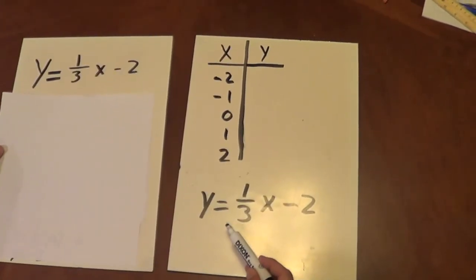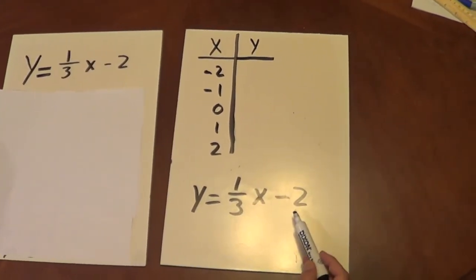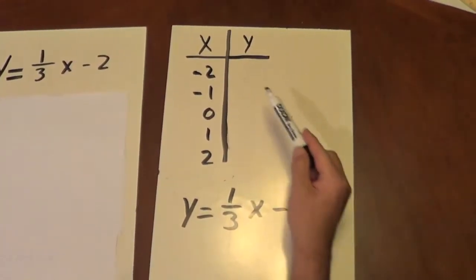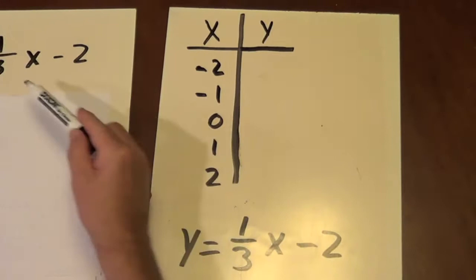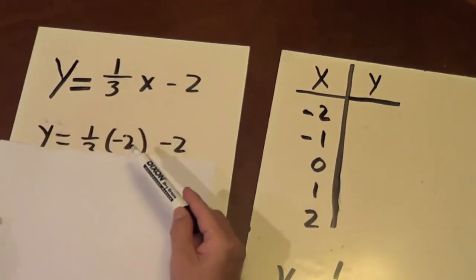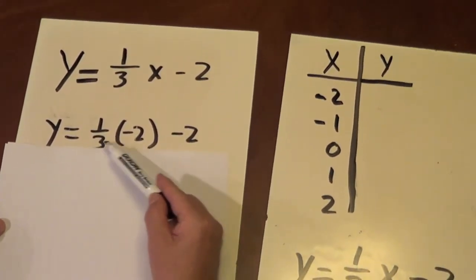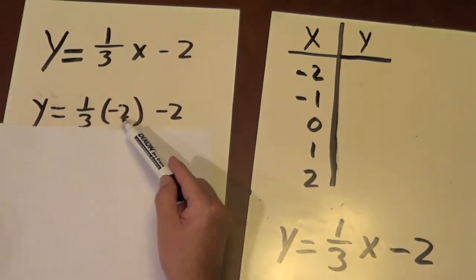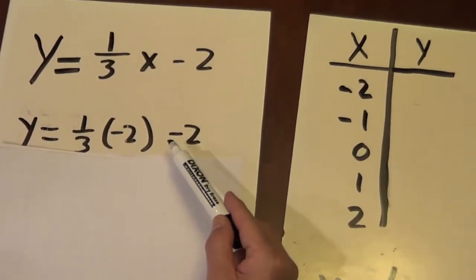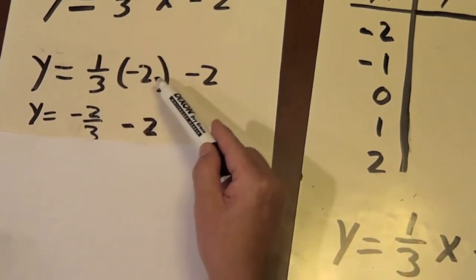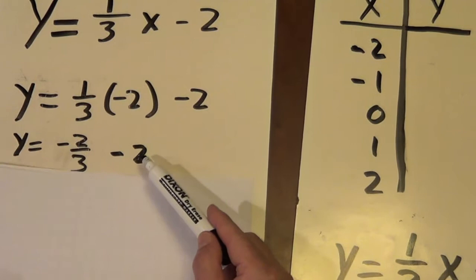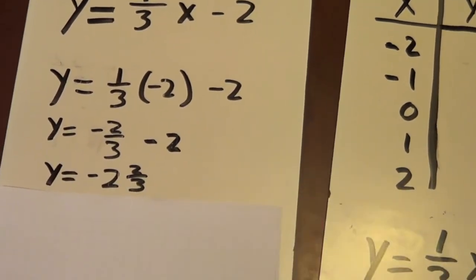Okay, so I have y equals 1 third x minus 2. And now I'm going to make my t-chart. So I'll use negative 2, and we'll move over here. I'll put negative 2 in place of x. So I have 1 third times negative 2 minus 2. And 1 third times negative 2 is 2 thirds. And then minus 2 is y equals negative 2 and 2 thirds.